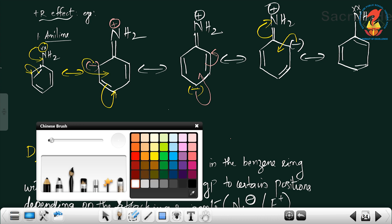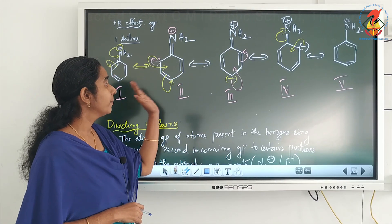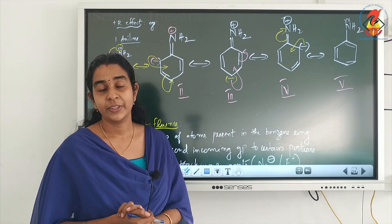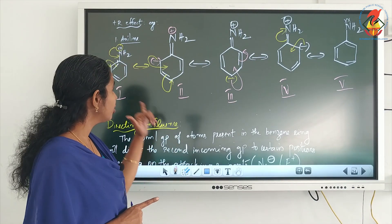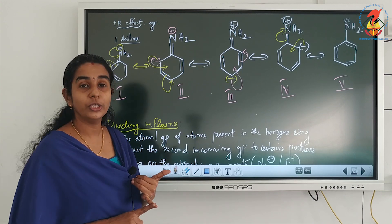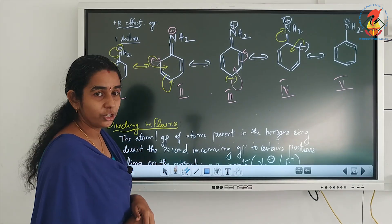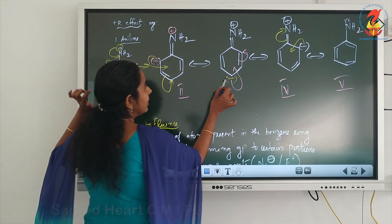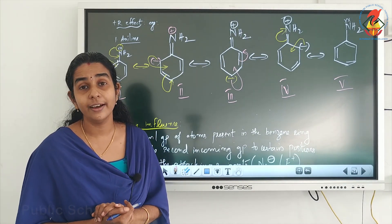So there are 5 resonating structures for aniline. Structures 1 and 5 are the same, differing only in the position of double bonds. Looking at the resonating structures, due to resonance, electron density increases at the ortho and para positions. So due to resonance in aniline, electron density is increasing at ortho and para positions.